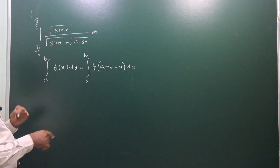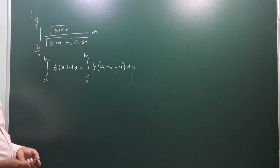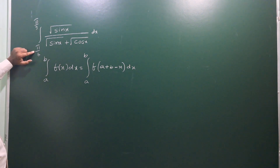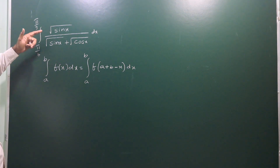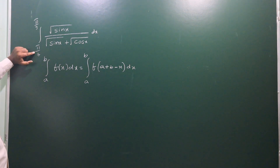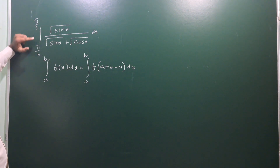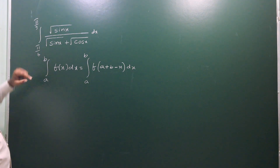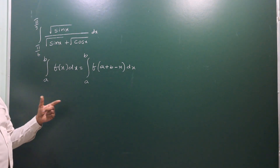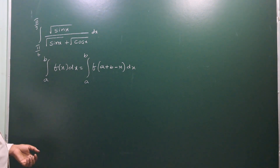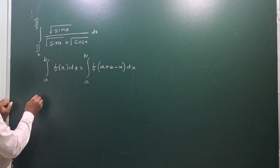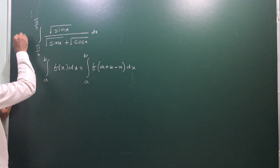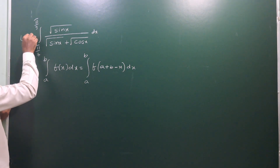In this function, we replace x with a + b - x. Here a = π/6 and b = π/3, so a + b = π/6 + π/3 = 30 + 60 = 90 degrees, meaning we substitute 90 - x. Let us call our given integral I.